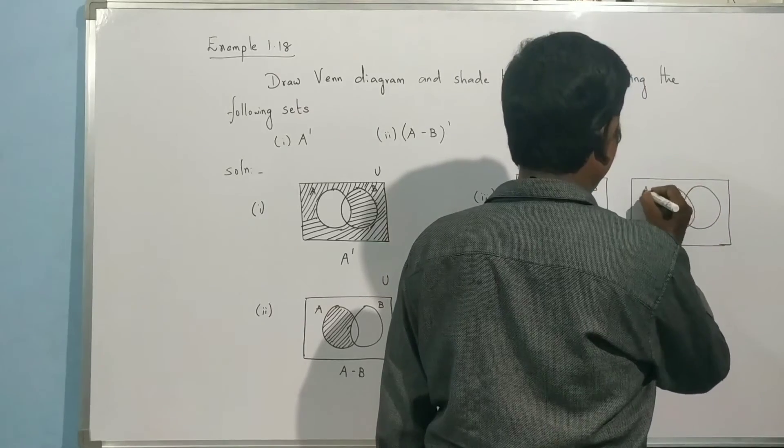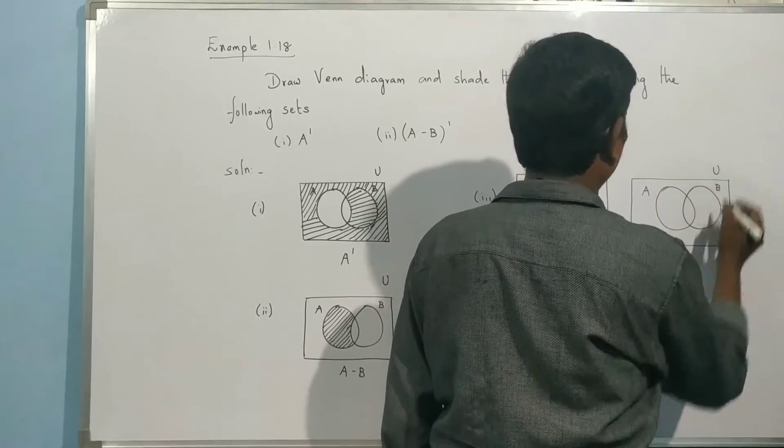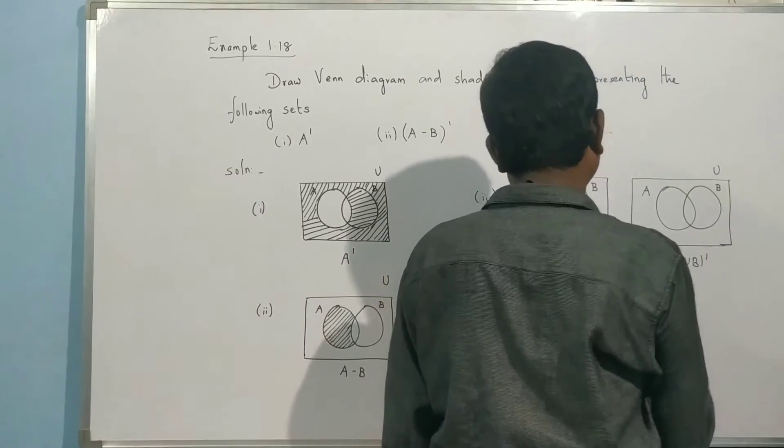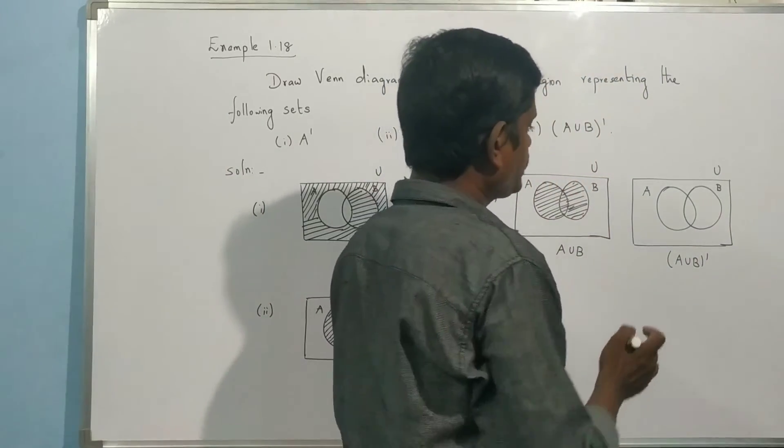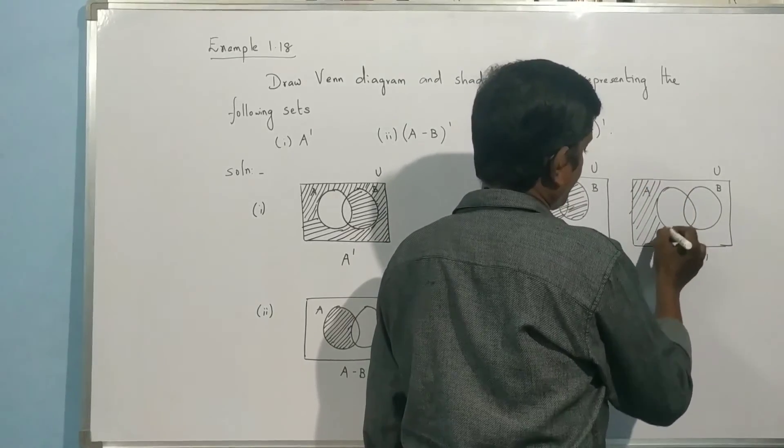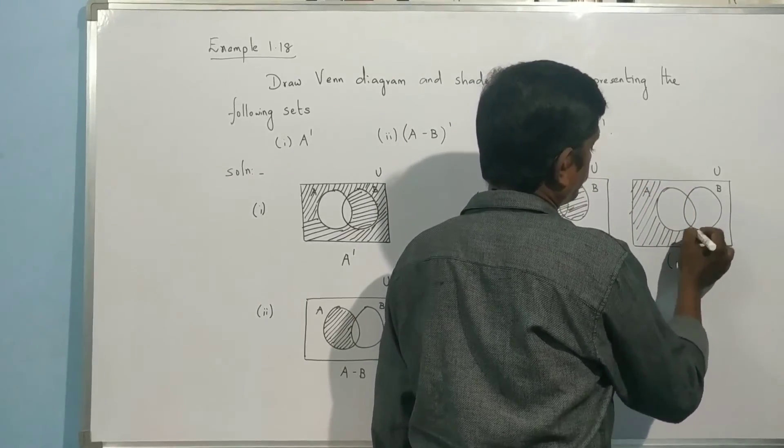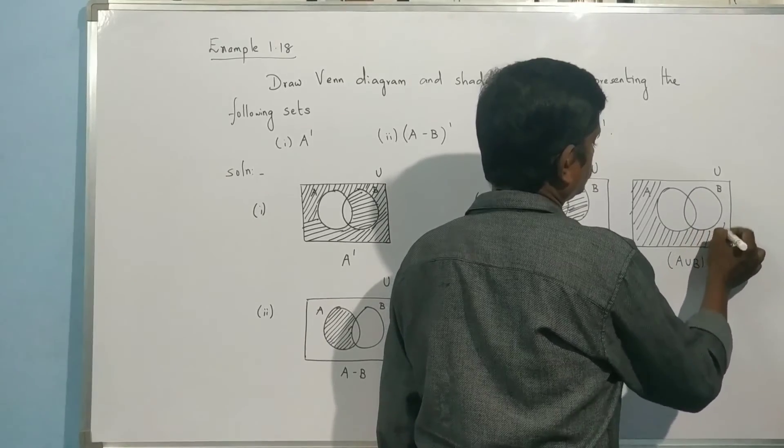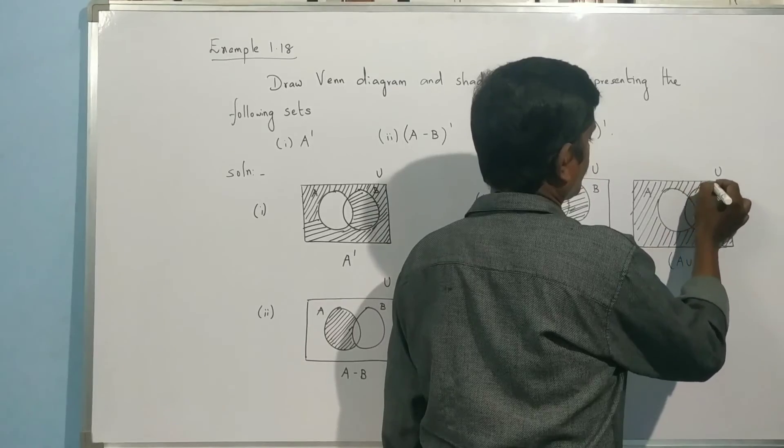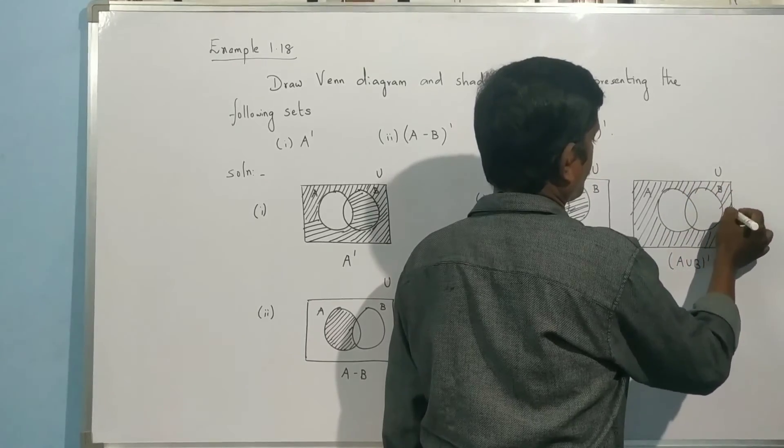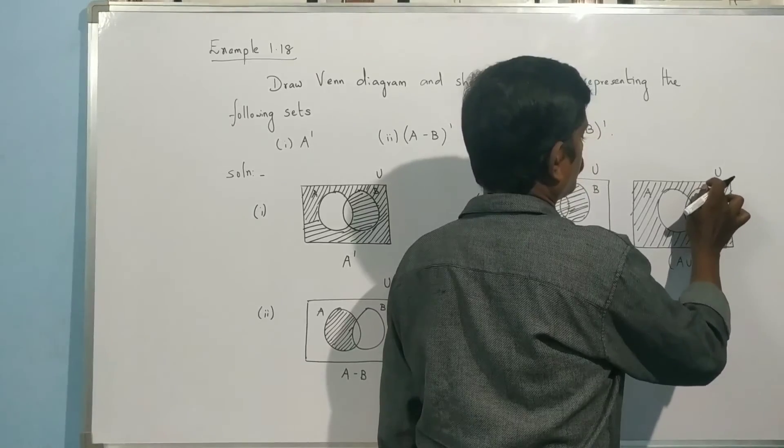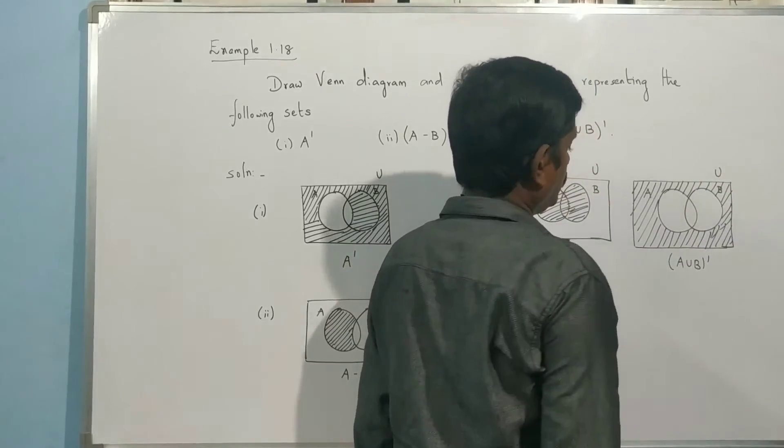Now A, B, union. A union B the whole dash. I will shade the marked region, the complement of A union B.